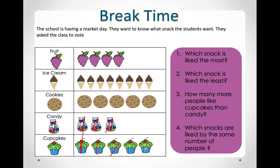Now they're asking us, which snack is liked by the same number of people? We count fruit: 1, 2, 3, 4 — no other snack has 4. Ice cream has 8 votes — no other snack has 8. Cookies: 1, 2, 3, 4, 5. Is there any other snack that has 5 votes? Let's count the cupcakes: 1, 2, 3, 4, 5. Yes! So the cookies and the cupcakes are liked by the same number of people.